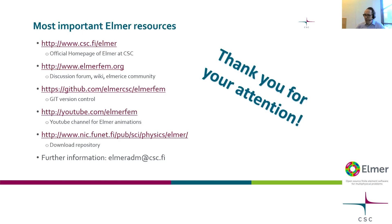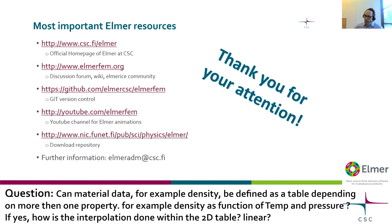The first question: can material data, for example density, be defined as a table depending on more than one property, such as density as a function of both temperature and pressure? I don't think there is currently any ready-made feature for that. That would be a good idea to have, but unfortunately it doesn't exist currently.